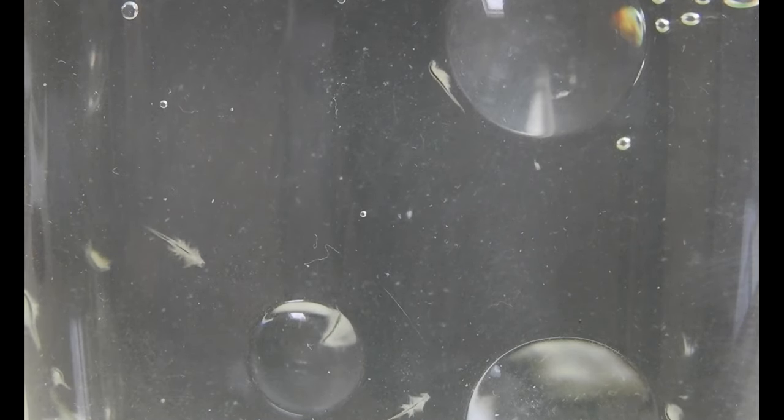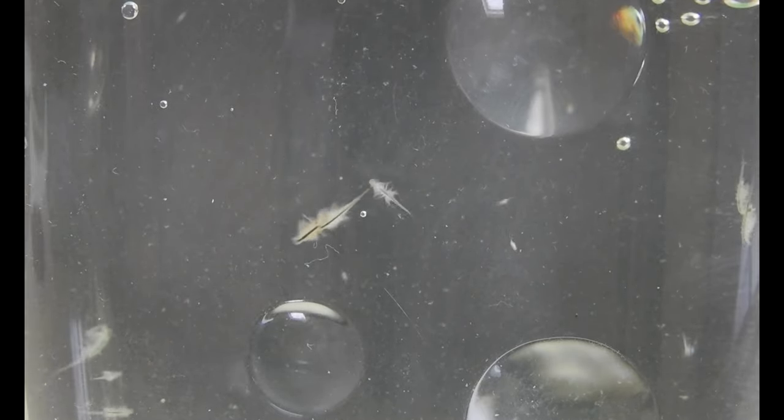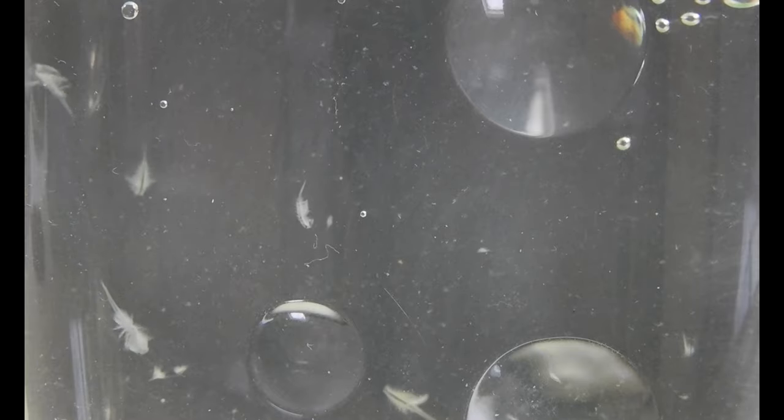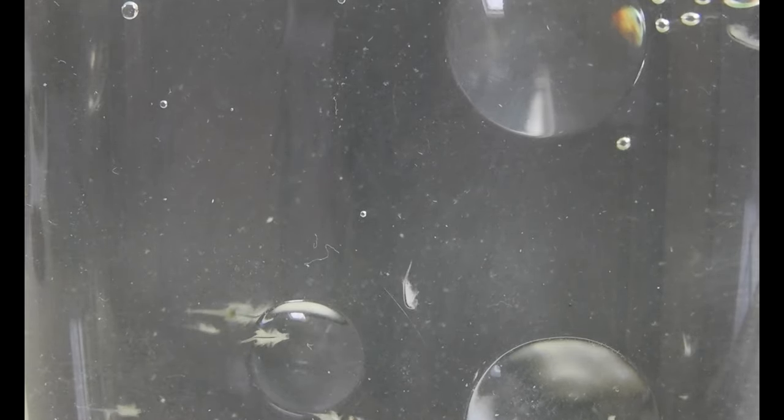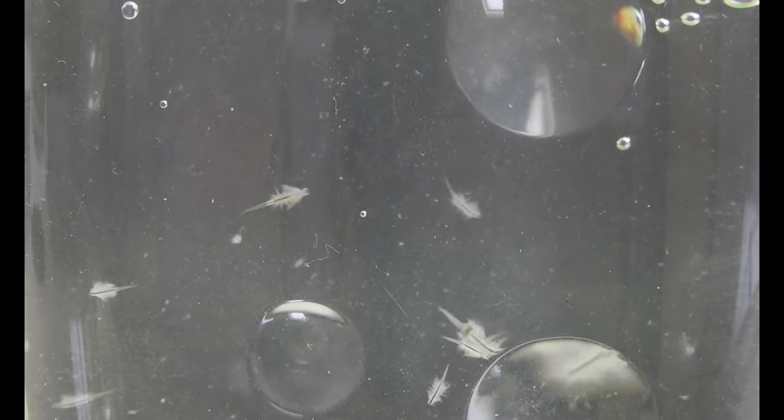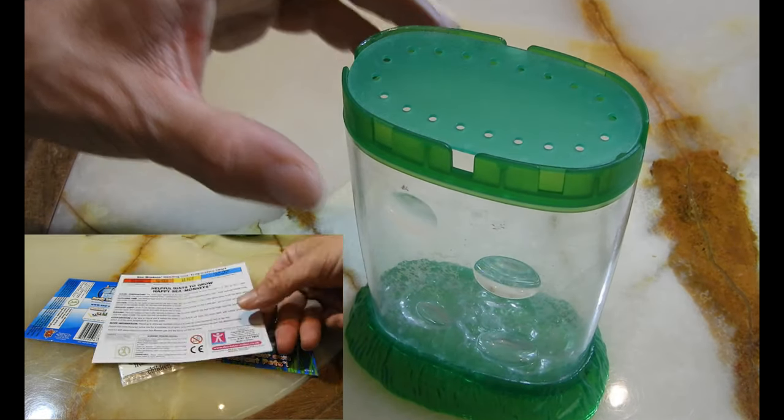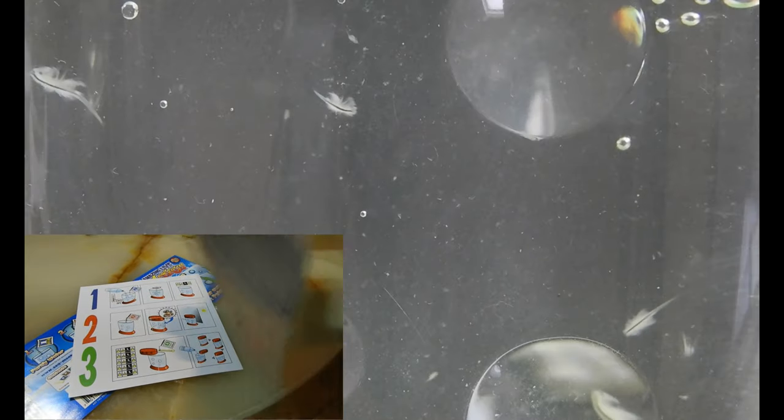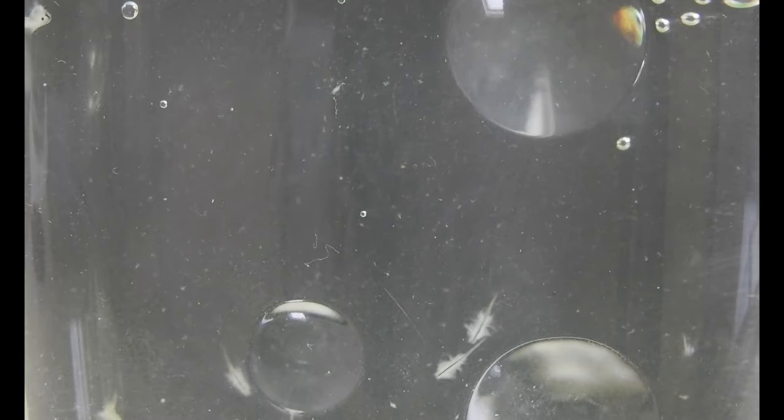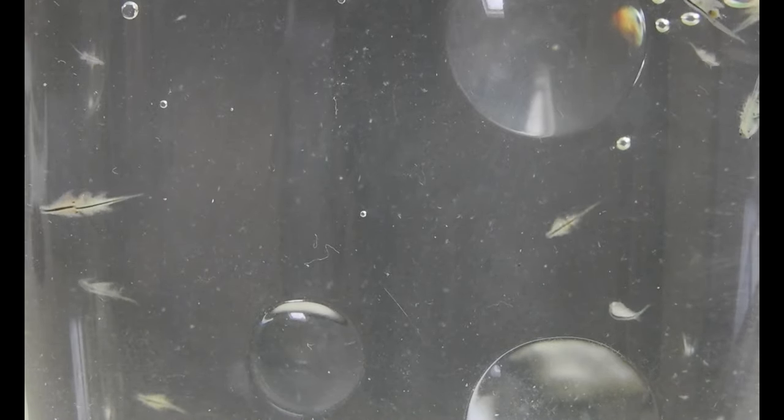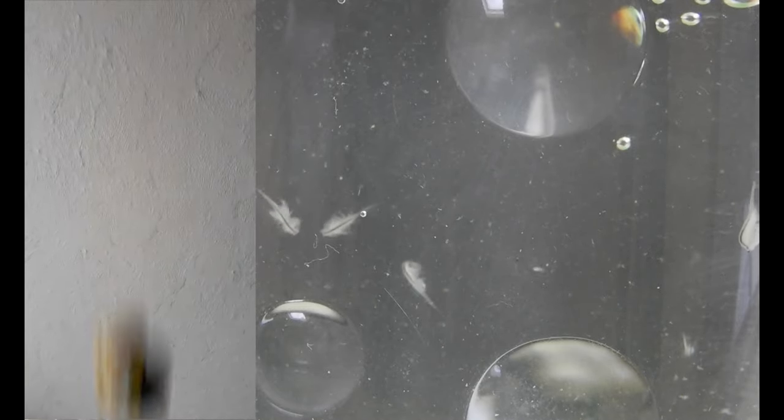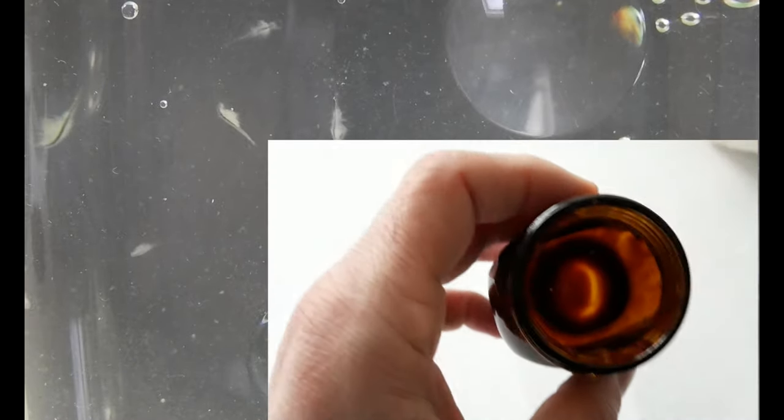So when I stumbled upon some actual sea monkeys years later as an adult in a real store for the first time, I just had to buy them. On April 27, 2012, I acquired an official ocean zoo kit at the gift shop of the science museum in London, UK. When transporting the kit back to Germany, there was a funny little incident at airport customs. The customs officer tossed the ocean zoo kit unceremoniously aside. Did you know that yeast extract food spread counts as a liquid? By the way, by now I seriously love that stuff. It's an acquired taste I guess.